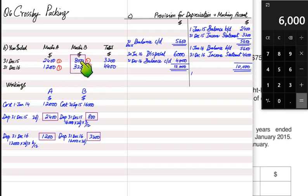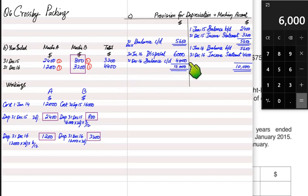The remaining 4,000 represents the total depreciation for Machine B only — 800 from 2015 and 3,200 from 2016 equals 4,000. This becomes the balance carried down (balance CD), which is the balance brought down at the start of the next accounting period. This completes the provision for depreciation account.